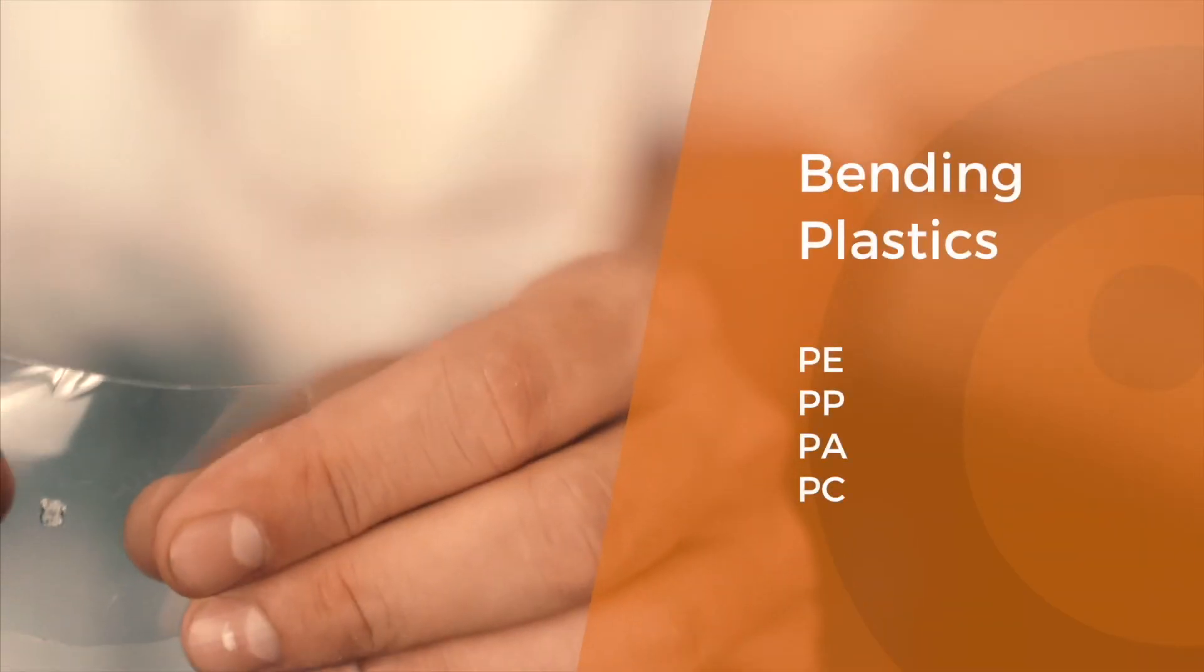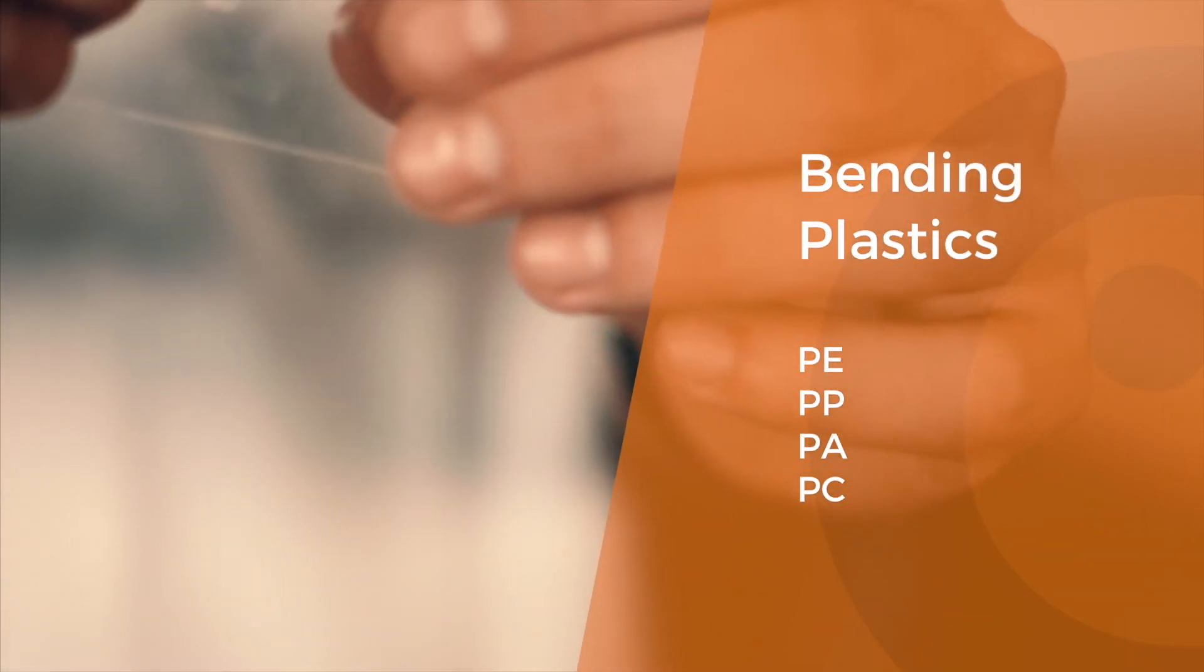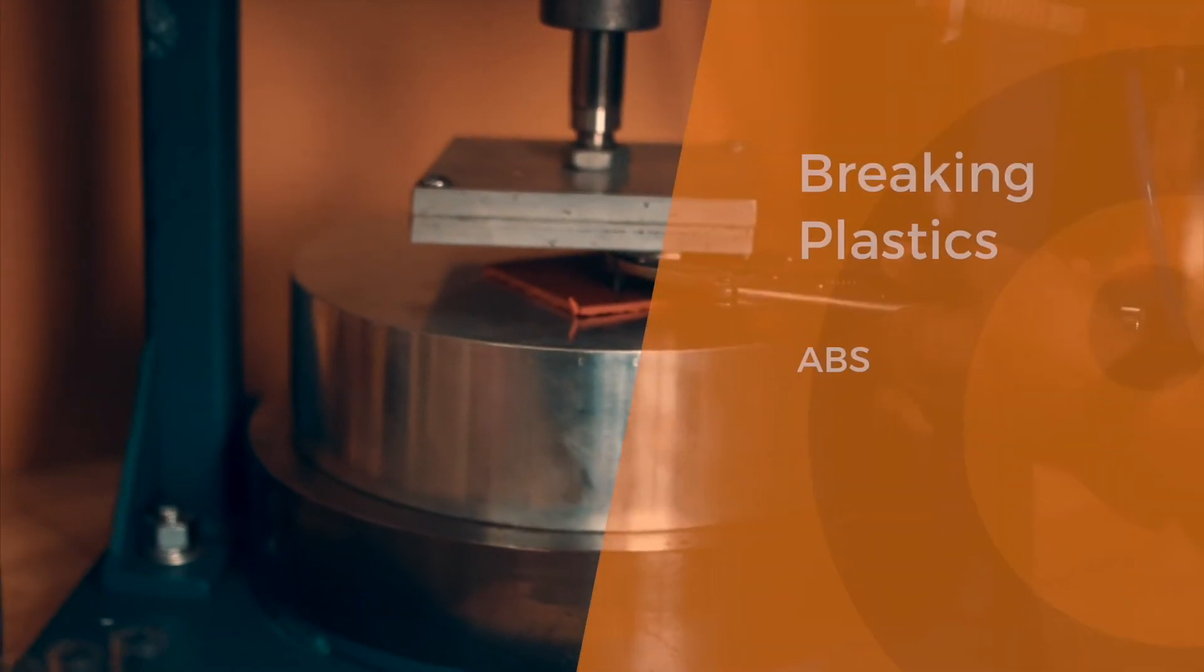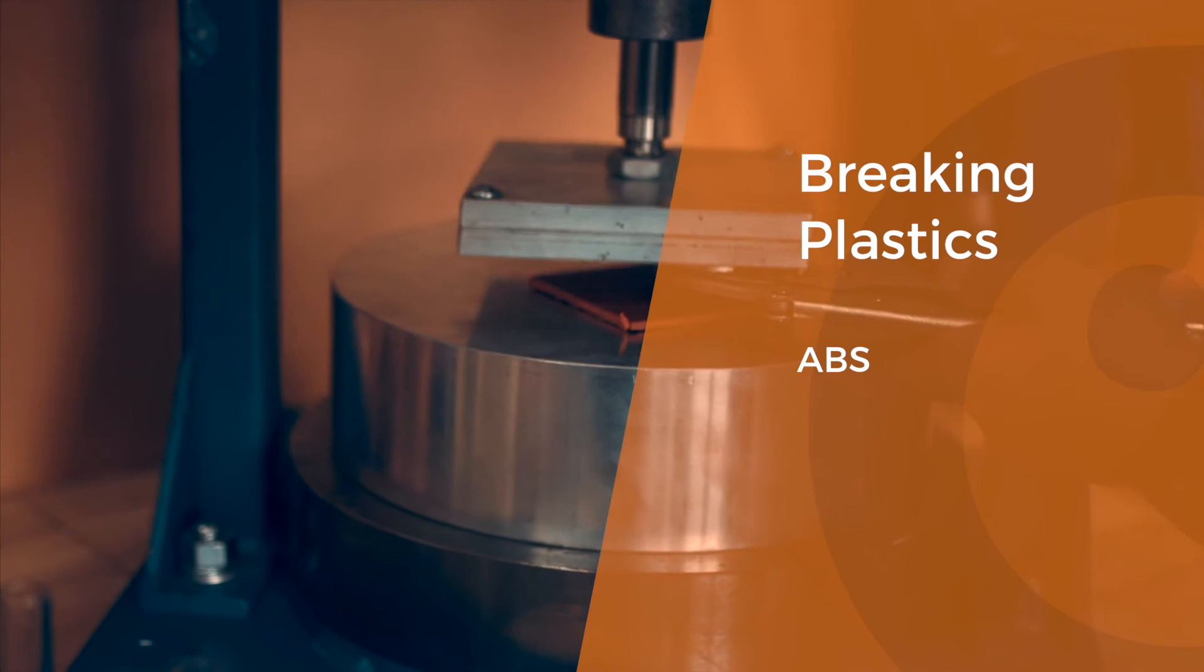Does the plastic bend? Then it belongs to the family of PE, PP, PA or PC. If it breaks, it's likely ABS which is well known for its solid shape.